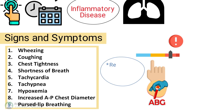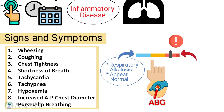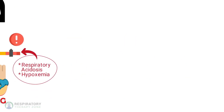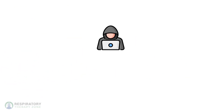Additional signs include increased AP chest diameter and pursed-lip breathing. Asthma episodes can range in severity from minor to life-threatening. ABG results may show respiratory alkalosis or appear normal in mild cases. However, as the condition worsens, the patient may show signs of respiratory acidosis and hypoxemia.